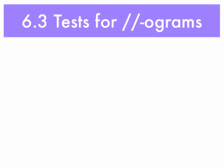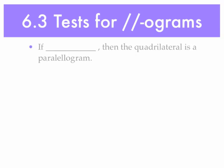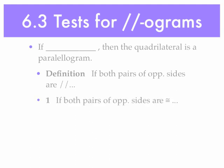Section 6.3 is all about these tests for parallelograms — the converse of the previous statements: if something is true, then the quadrilateral is a parallelogram. First is just the definition: if both pairs of opposite sides are parallel, then the quadrilateral is a parallelogram. Another test: if both pairs of opposite sides are congruent, then the quadrilateral is a parallelogram.